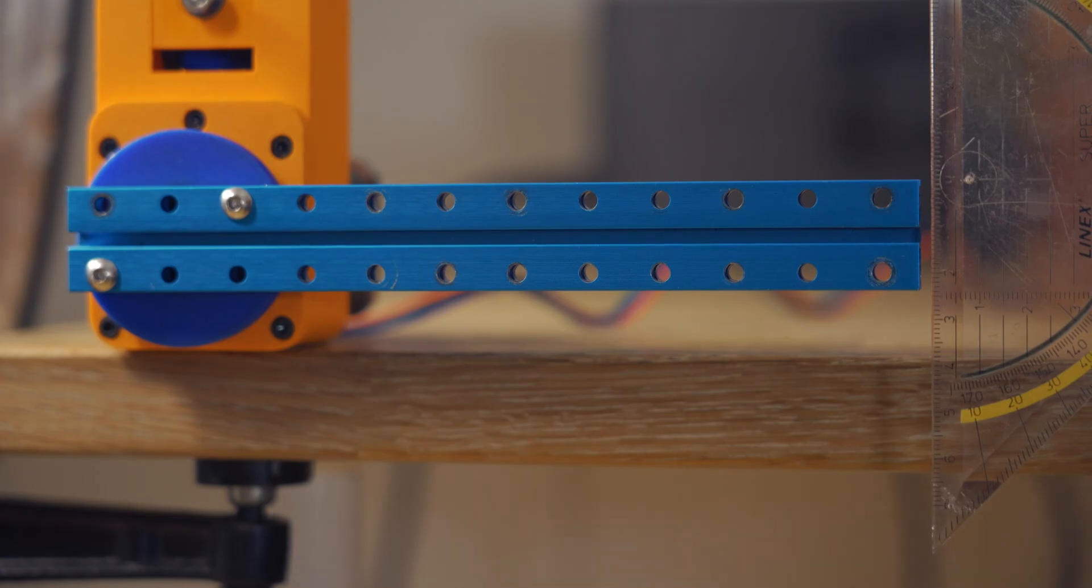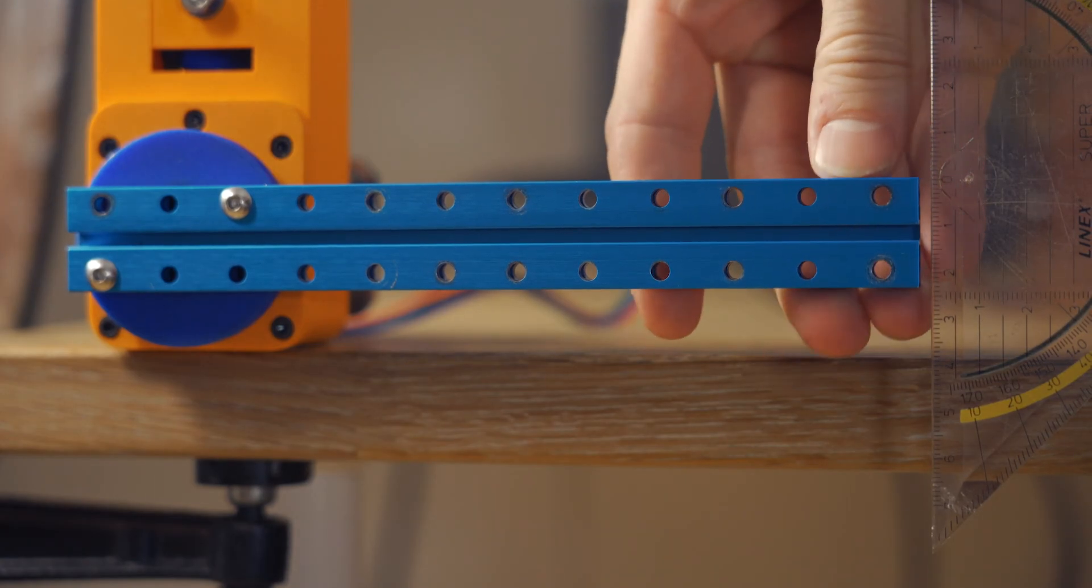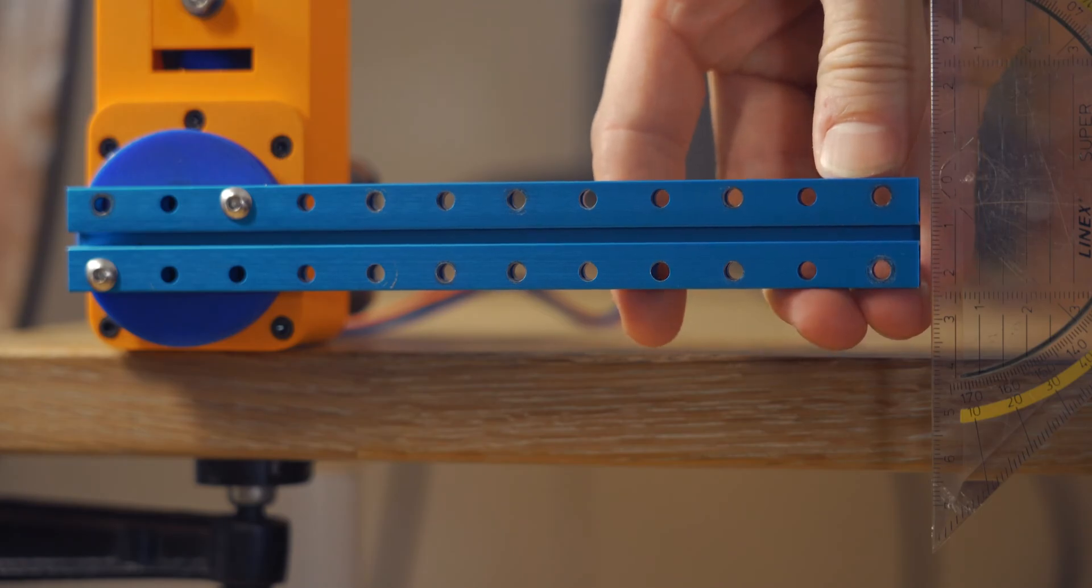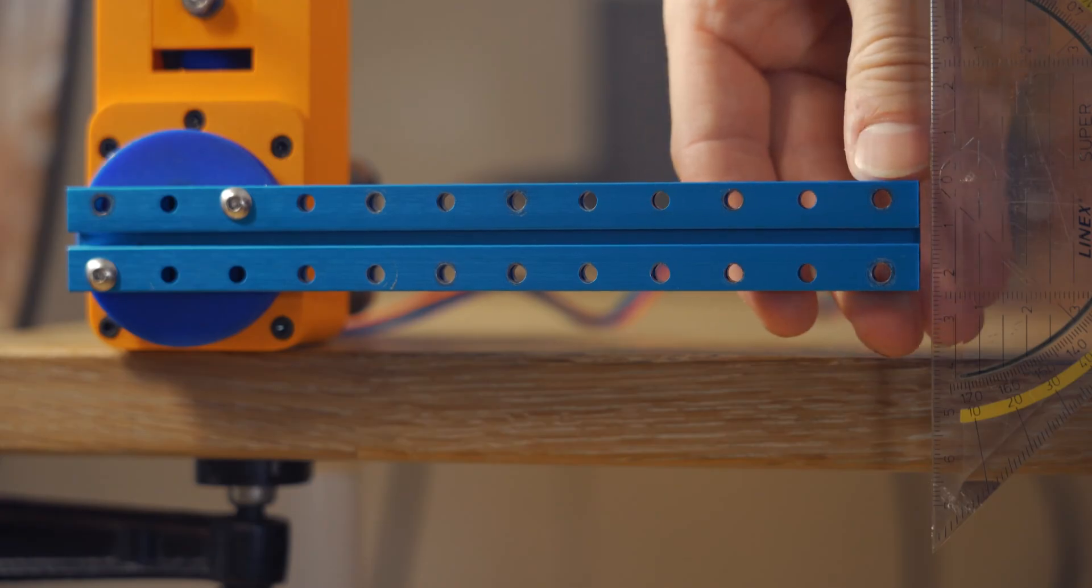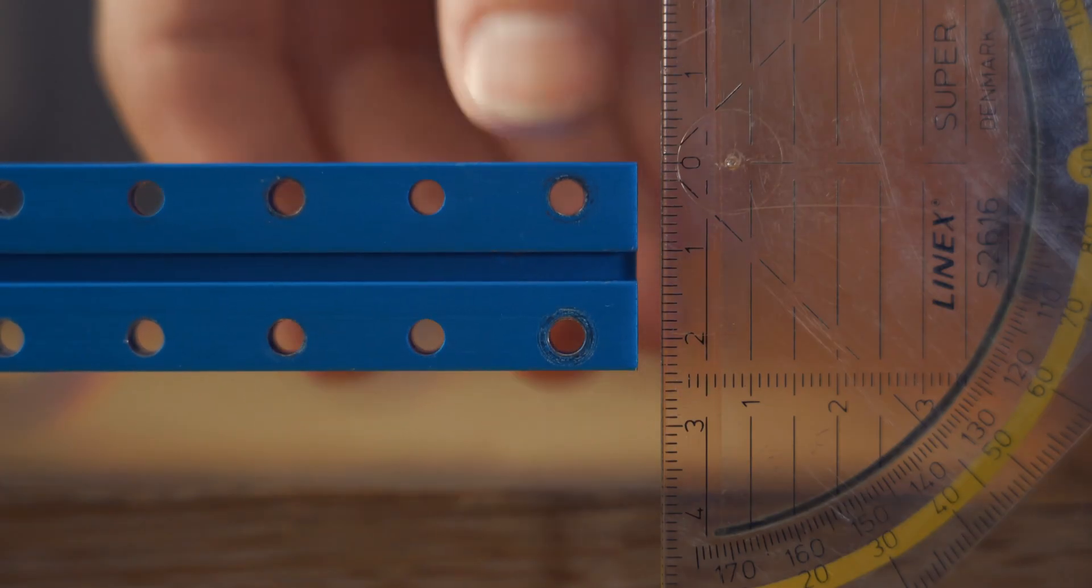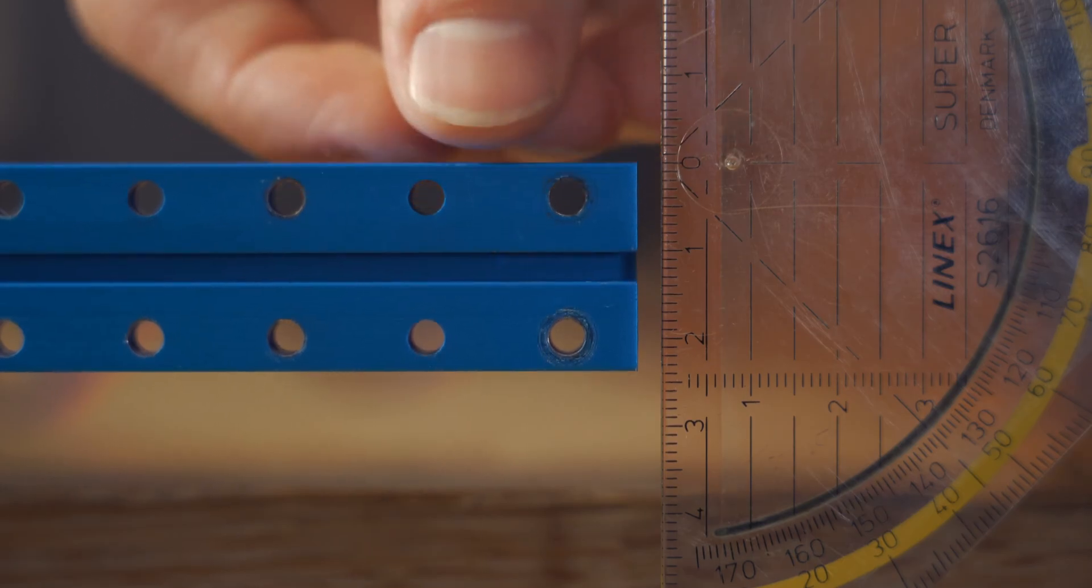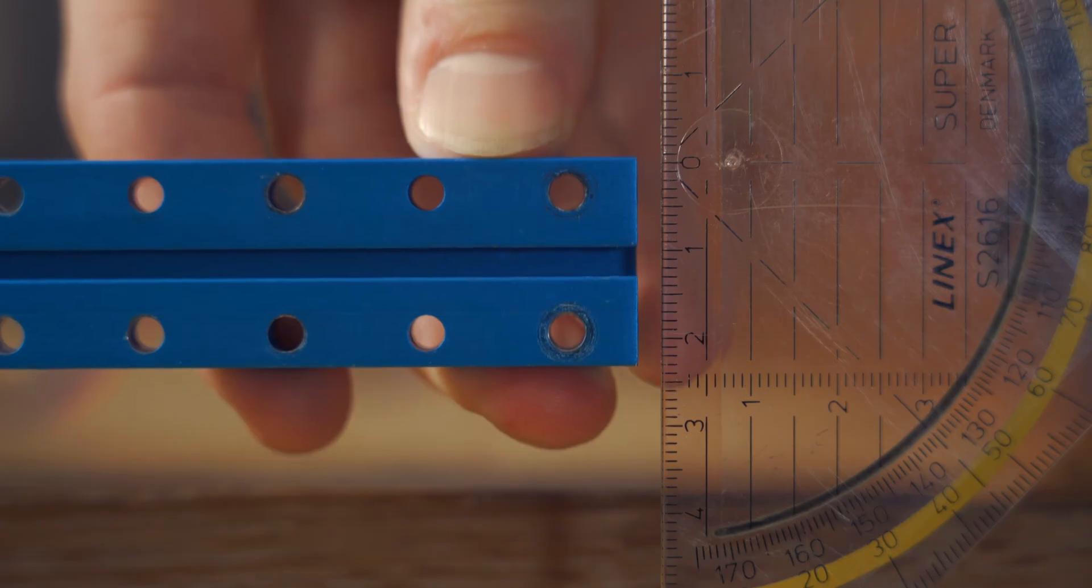So let's move on and test the backlash. This is what I've been most excited to have a look at. Here I'm trying to move the lever attached to the output shaft and with quite some force actually. It seems to move a millimeter in each direction. But it's important to point out that it's not at all loose.